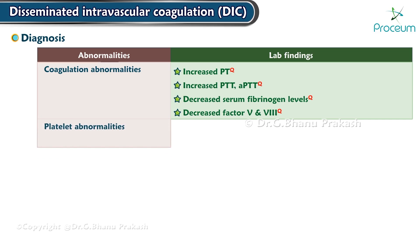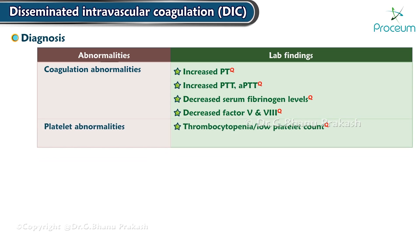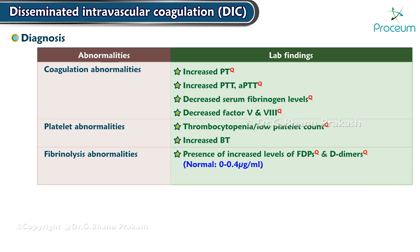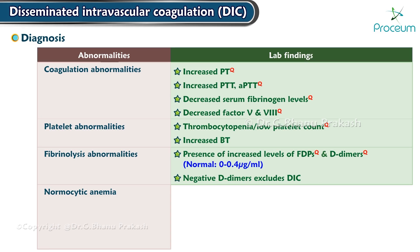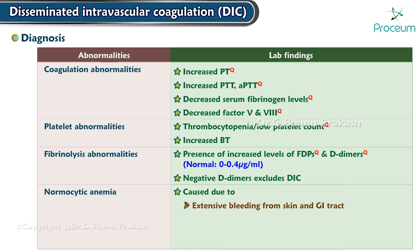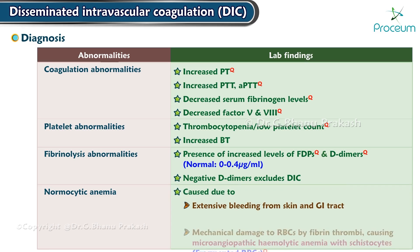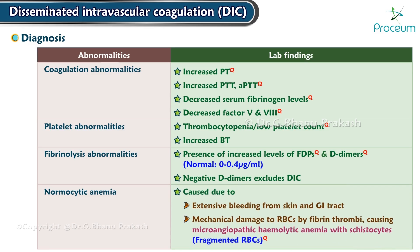Platelet abnormalities include thrombocytopenia, low platelet count, and increased bleeding time. Fibrinolysis abnormalities include increased levels of FDPs and D-dimers. Negative D-dimers exclude DIC. Normocytic anemia is caused by extensive bleeding from the skin and GI tract, and mechanical damage to RBCs by fibrin thrombi causing microangiopathic hemolytic anemia with schistocytes.